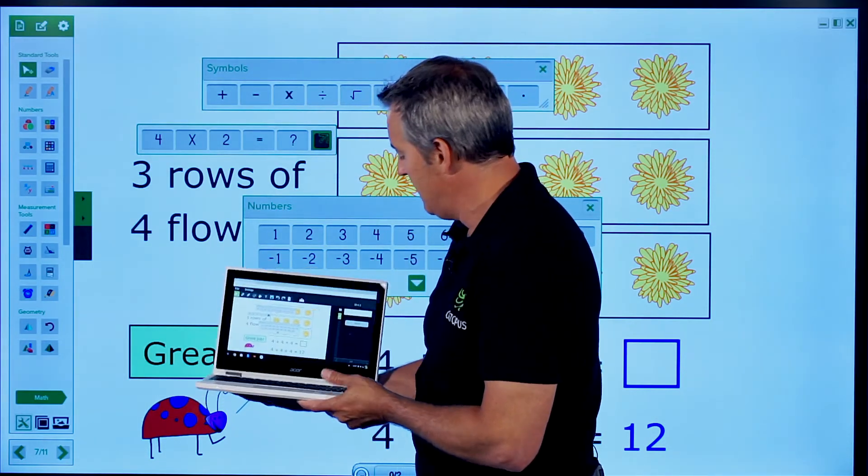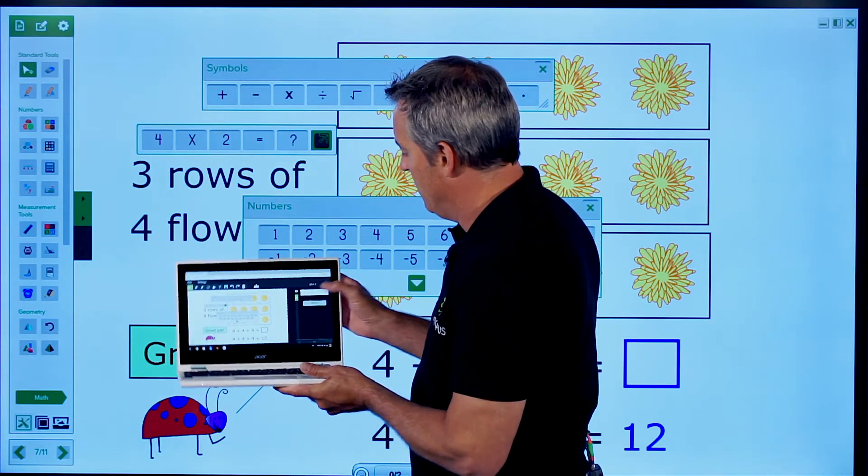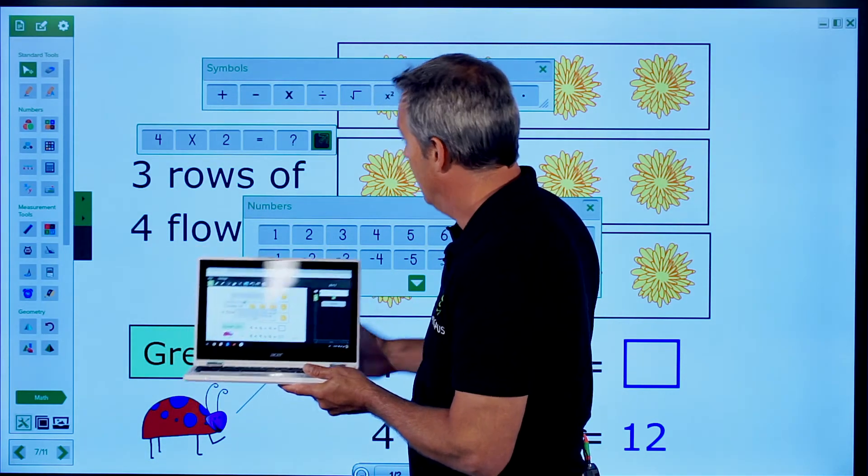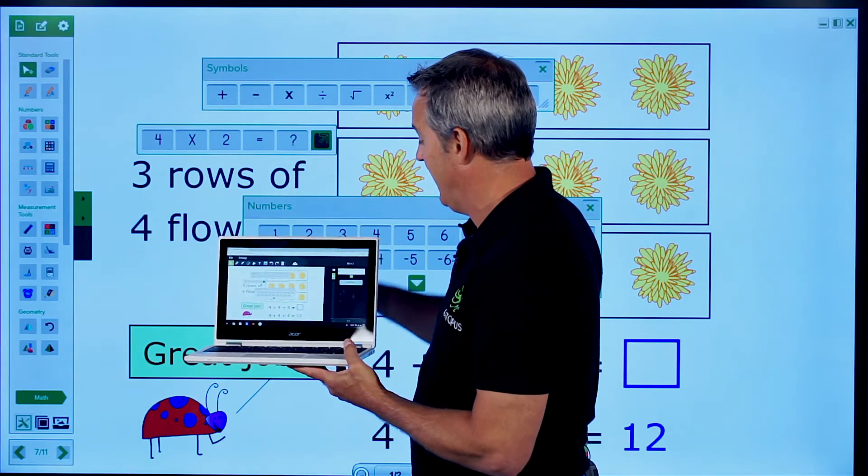And anywhere where you see this styled arrow related to an object, that allows you to instantly pose a question. So if I click that, now the students know that they're needing to answer that. Again,